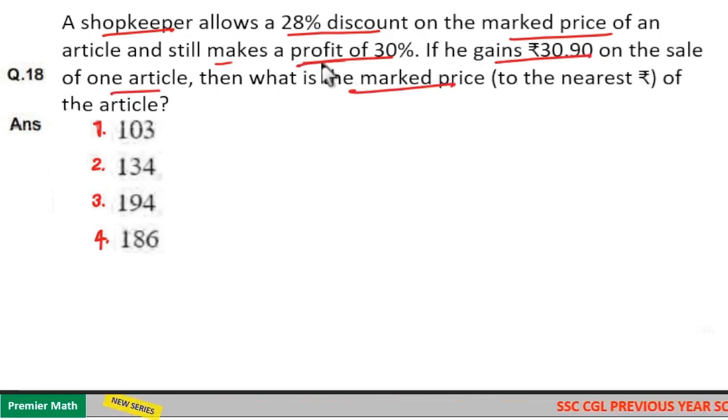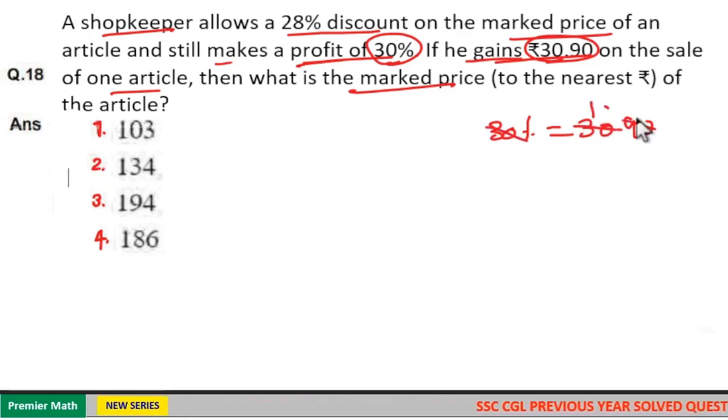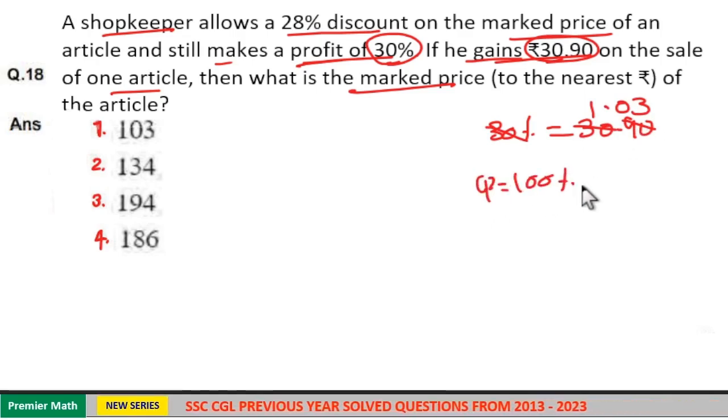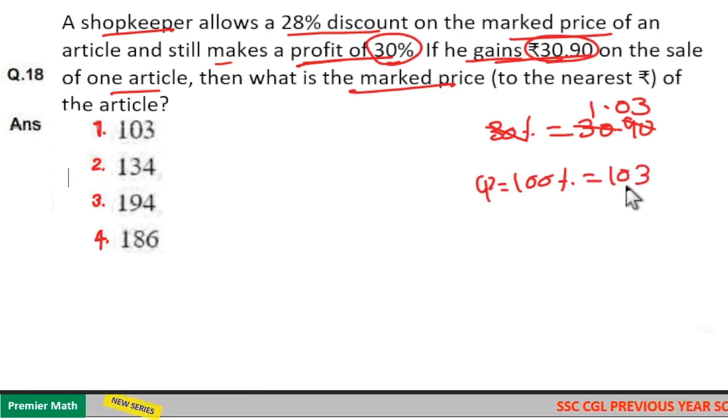Here, profit equals gain, so 30% = ₹30.90. If 30% = ₹30.90, then 30 goes one time in 30, and 30 goes 0.03 times in 0.90. So 1% = ₹1.03, which means 100% (the cost price) equals ₹103.